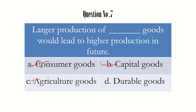Agricultural goods are not the answer because they may be used for consumption directly. Durable goods are goods which stay with us for a very long time — the best example is furniture, which stays in our house for 10 to 15 years — so this is also not helping in production. Therefore the answer is B — capital goods. Large production of capital goods leads to higher production in the future. A simple example of a capital good is a sugarcane juice crusher machine, which helps in the production of sugarcane juice.